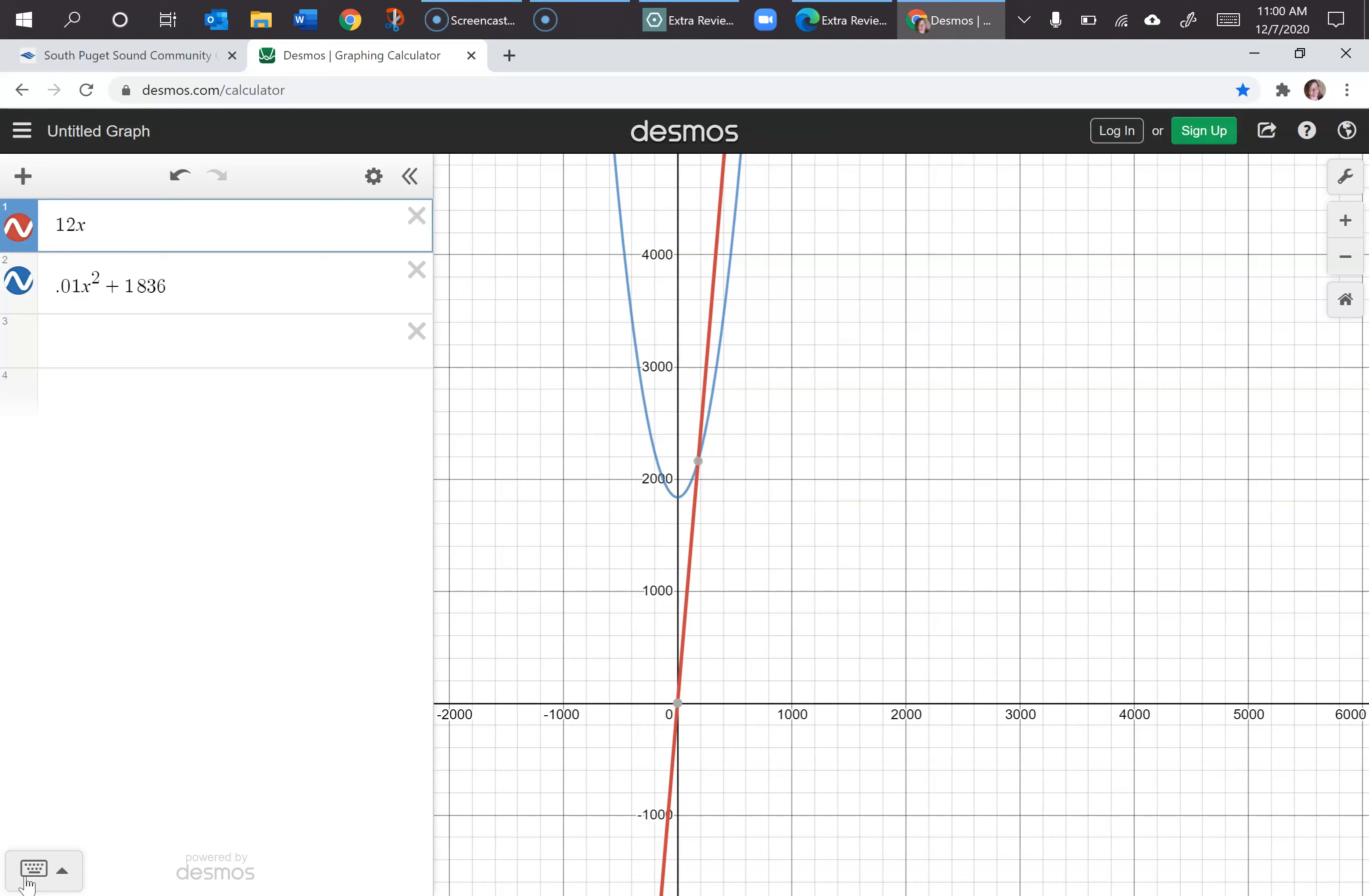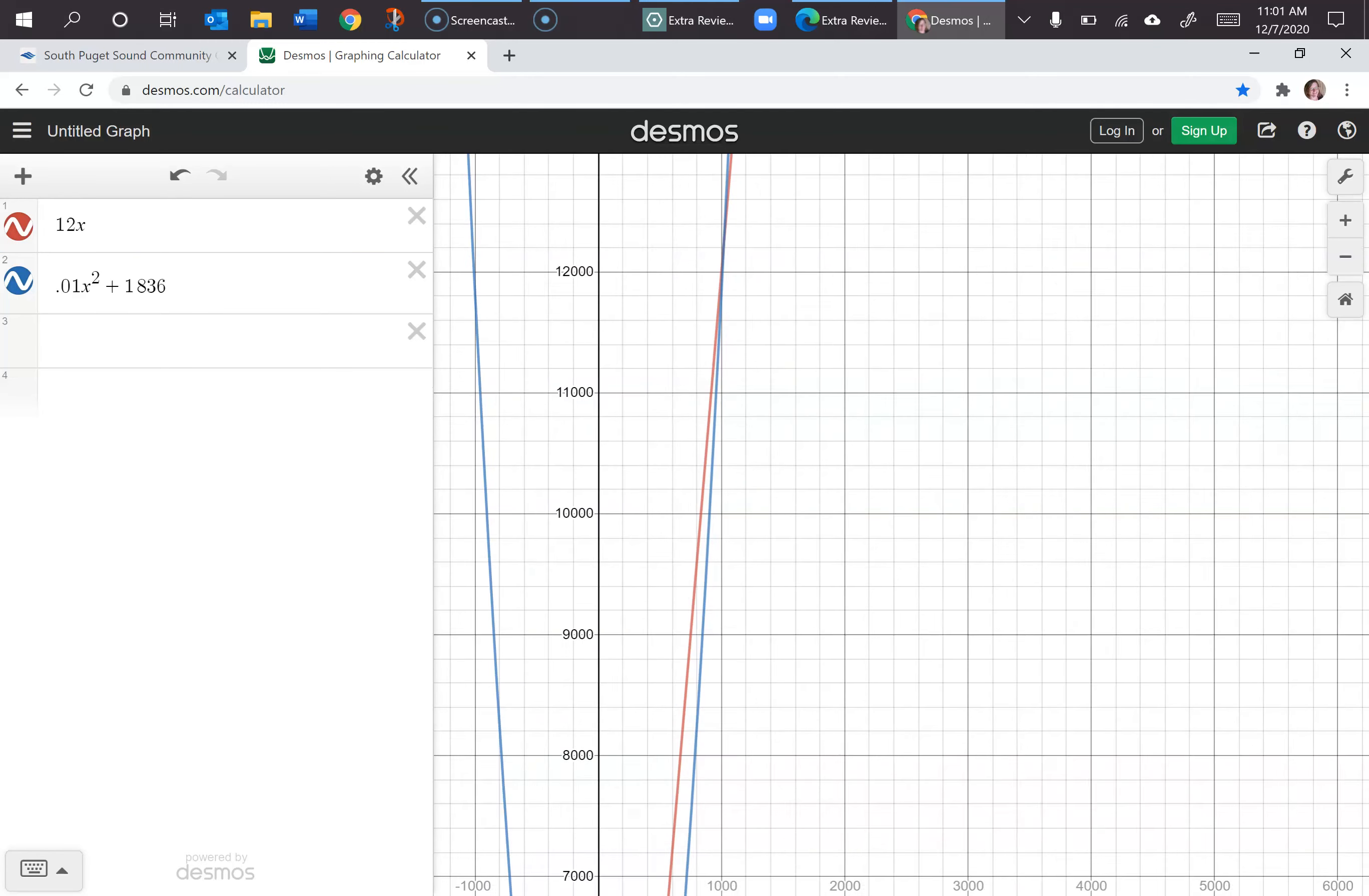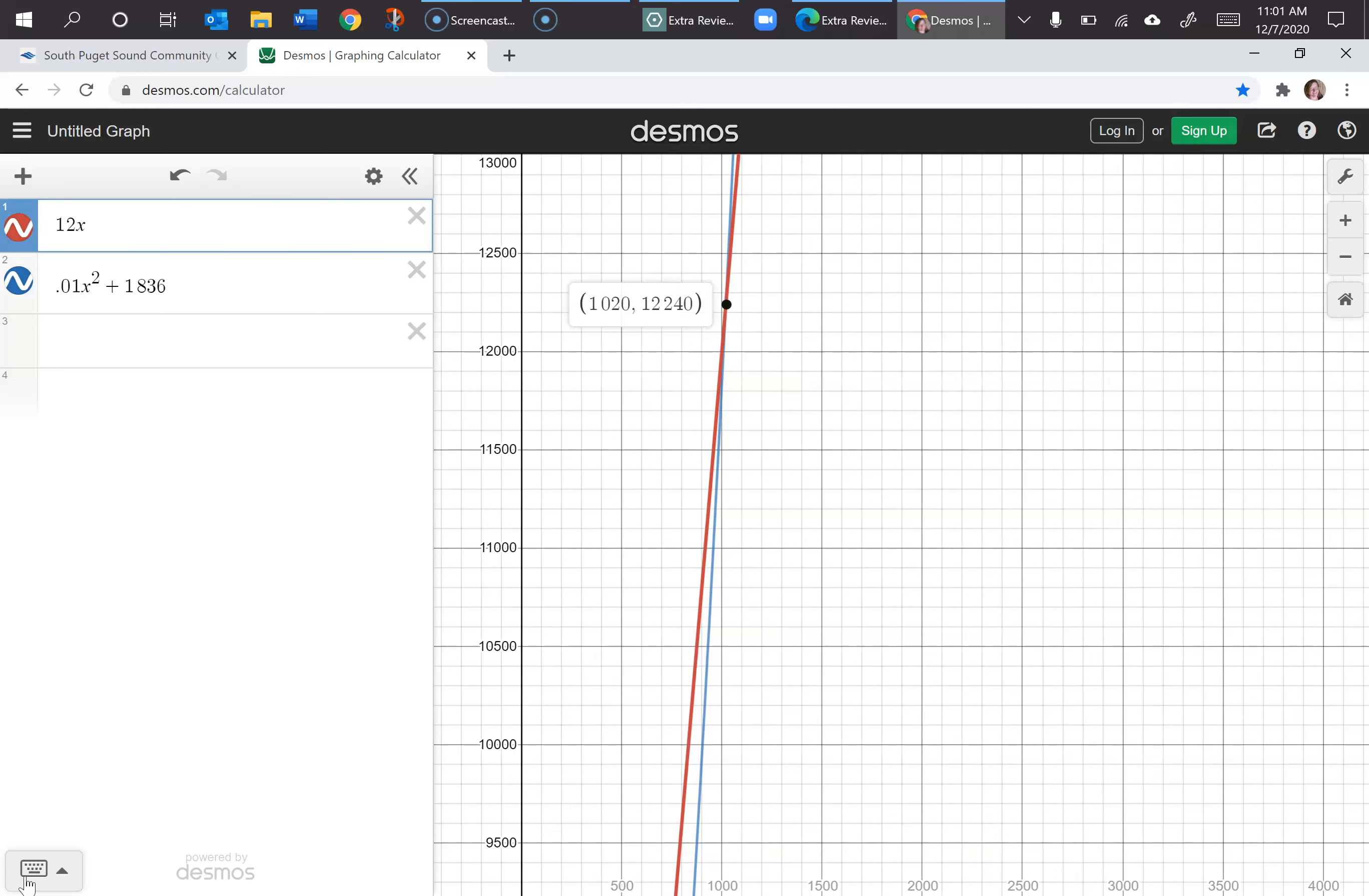You can see the first point of intersection on the graph is 180 for the x value and 2160 for the y. The second point of intersection is kind of way up here. Let's see if I can get it. If you just touch it, it'll kind of put a dot where you want it to be. So 1020 pounds, $12,240. So that's when my revenue equals my cost. So those are considered my break-even points, when I would have 180 pounds of chocolate creams and 1020 pounds of chocolate creams. So somewhere in between there I'm getting profit. So we want to see what production levels will give me that.